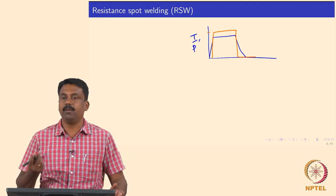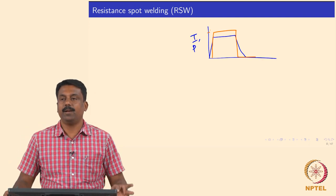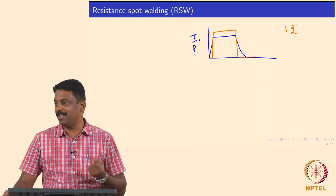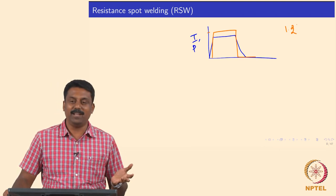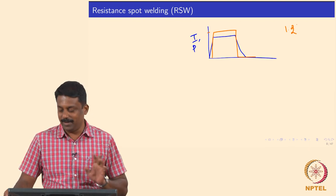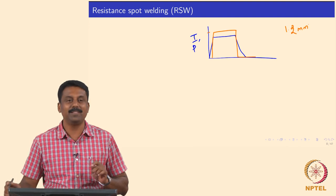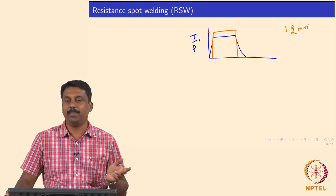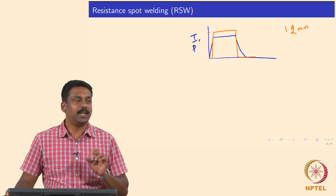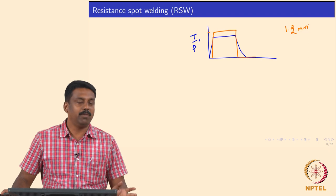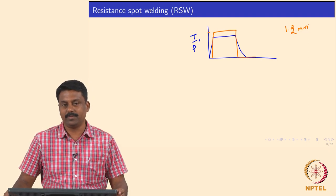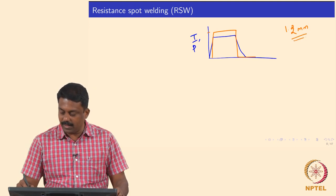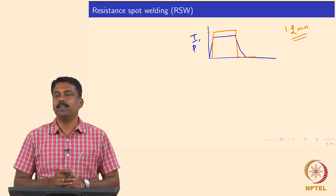Typically the current will be in a few kilo amperes. For 1.2 mm thick steel - and I use 1.2 mm because these are very commonly used thicknesses for engineering applications, especially automotive industries - we use about 4 to 8 kilo amperes based on the weld nugget size we want. The load would be around 3 to 4 kilo newtons. That is the typical current and load we use.